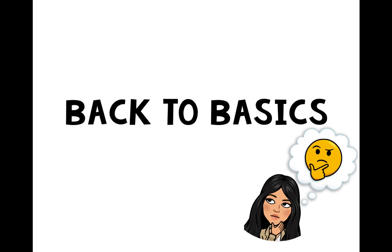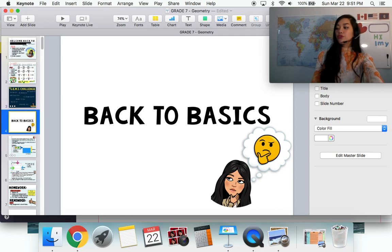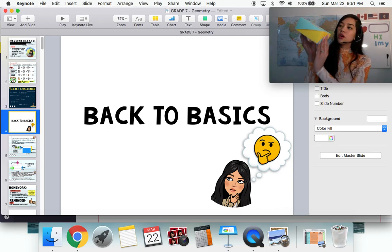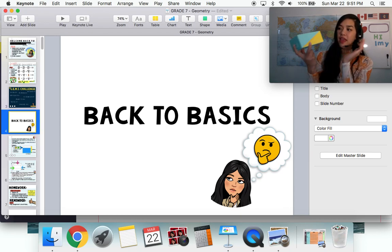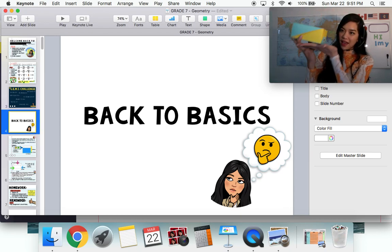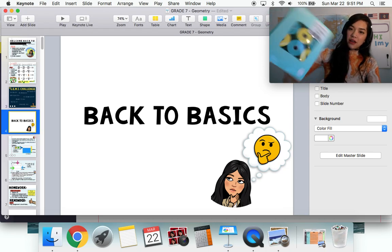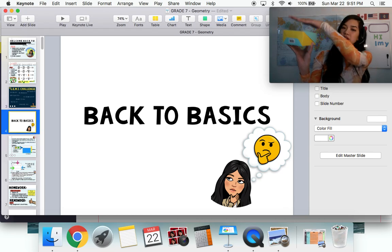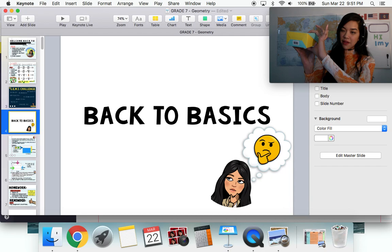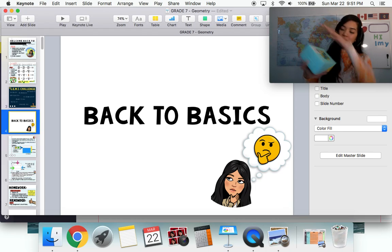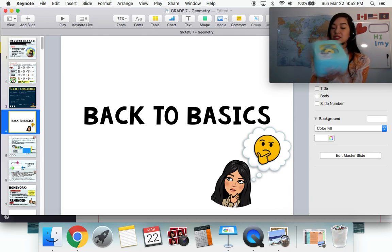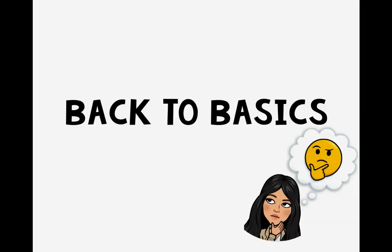We're going to do the same thing — we're going to be finding the area of a 3D shape, just like last year. What you remember from area is the same thing as surface area, it's just 3D. You're going to find the area of each side and add them all together. We found the area of each face and multiplied by 2 because opposite faces are the same. This year we're going to incorporate our formula.